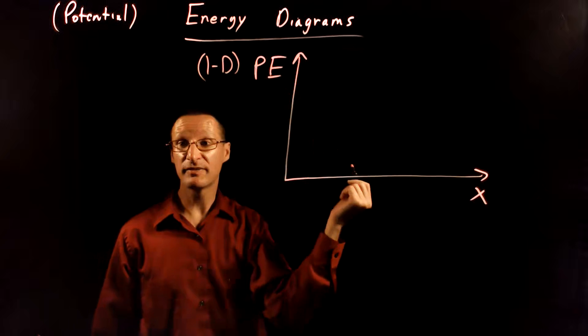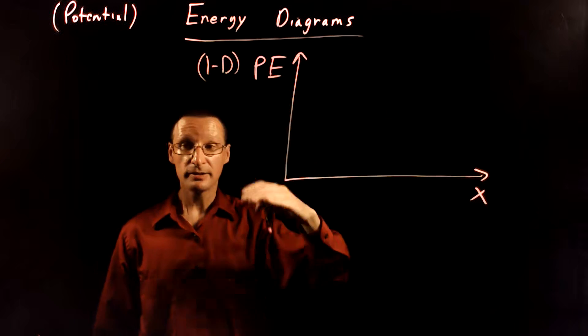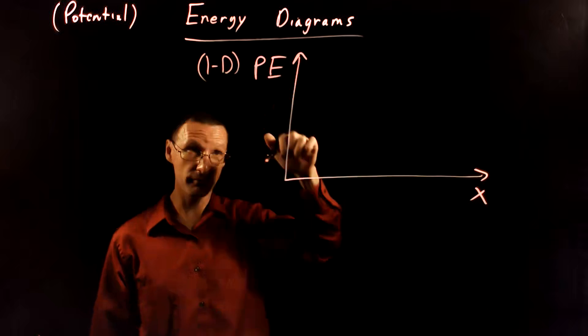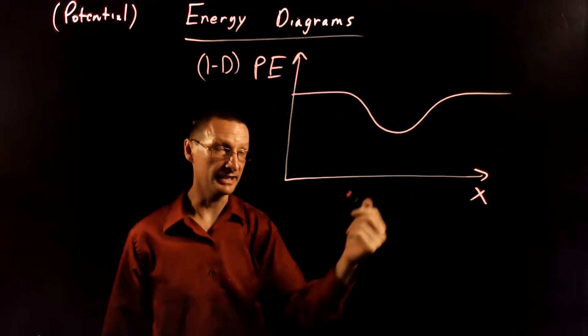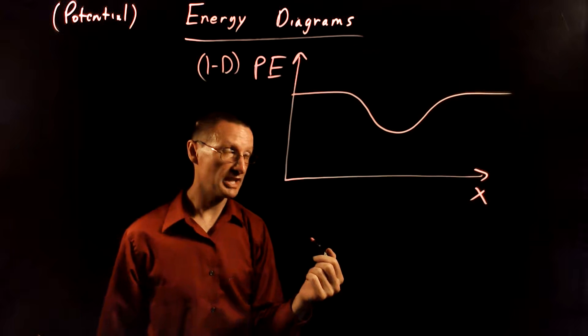So imagine you have something like a hill. Because gravitational potential energy depends linearly on the height of the hill, you can literally think of a hill or like a valley is shaped like this.